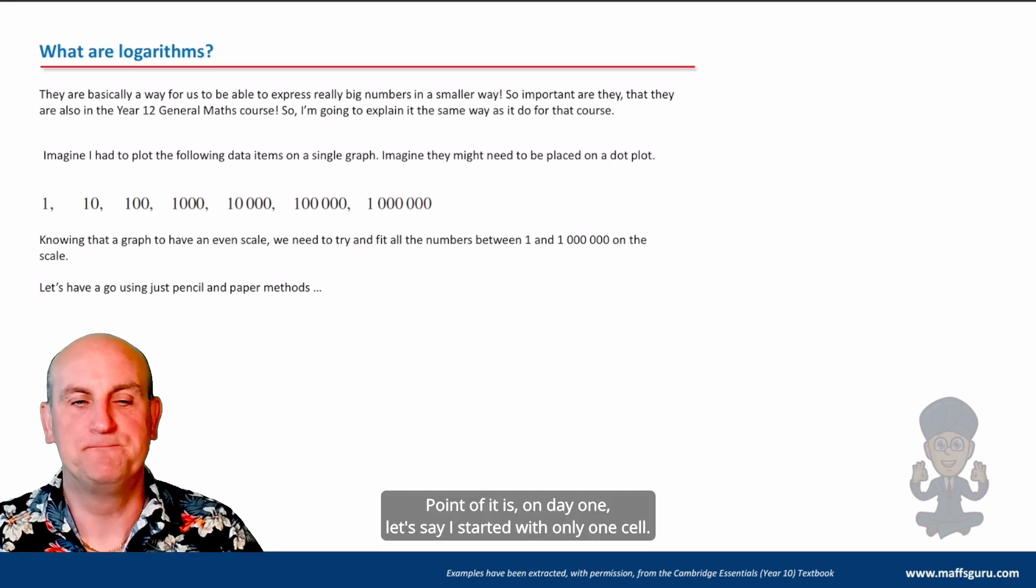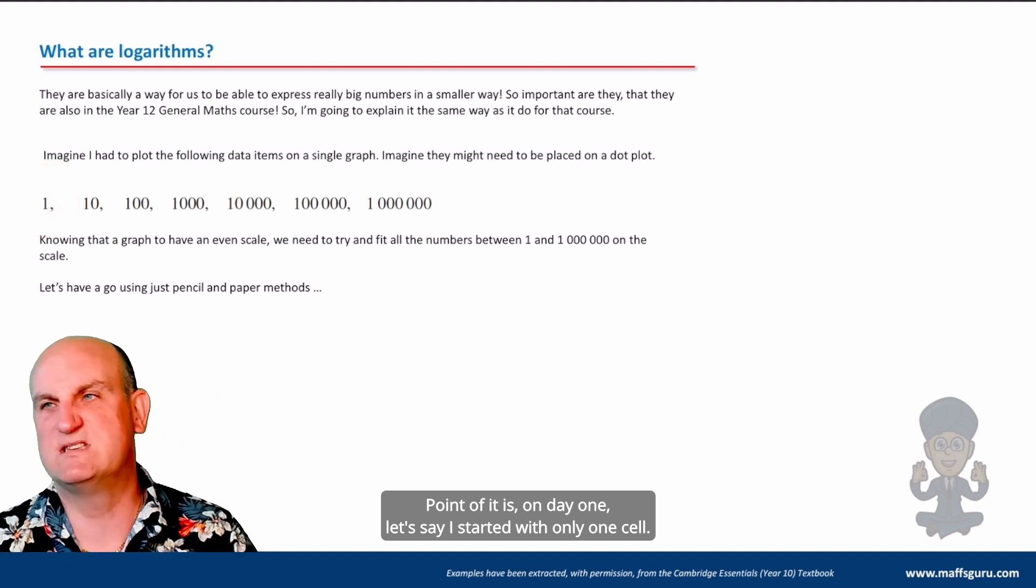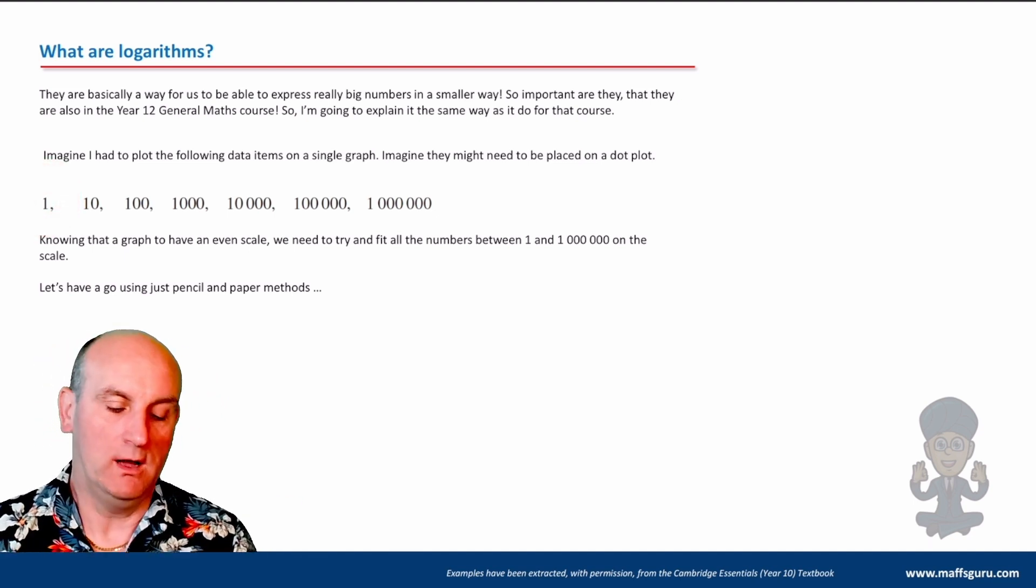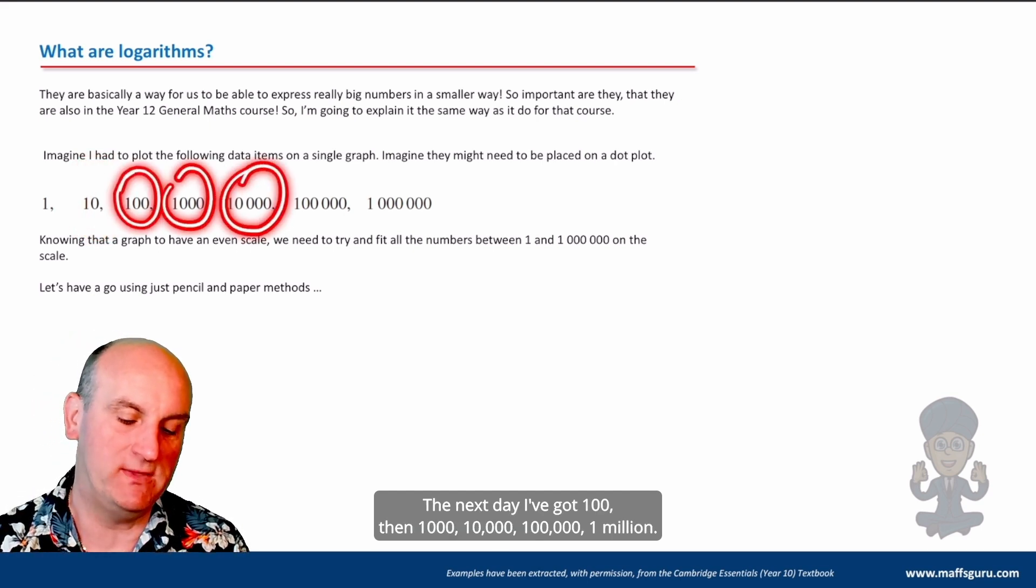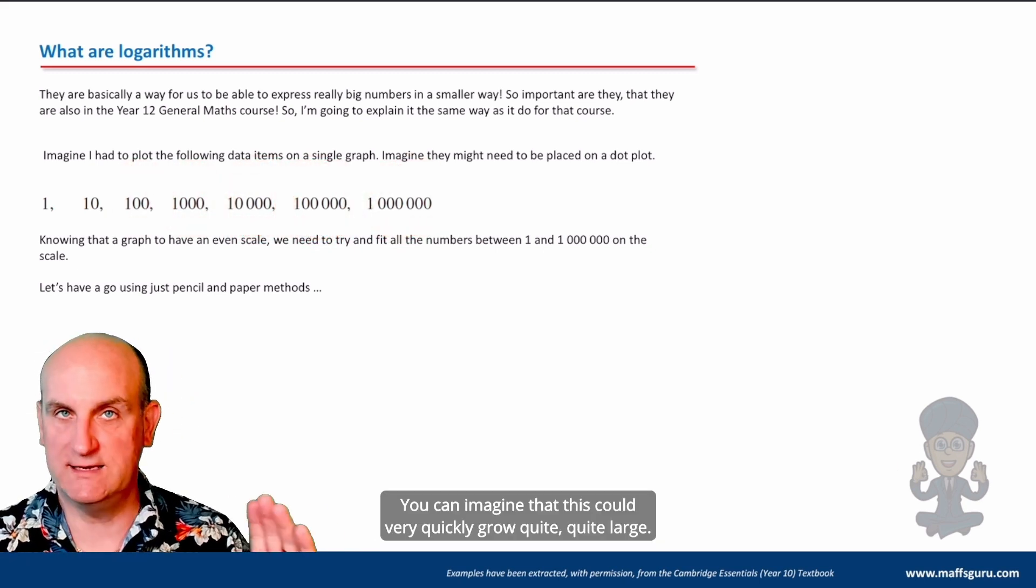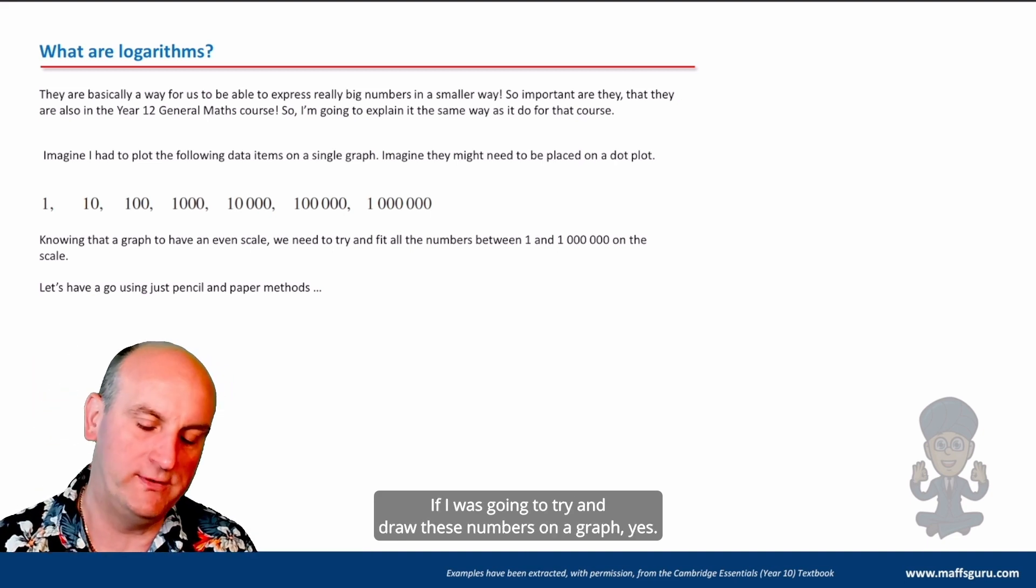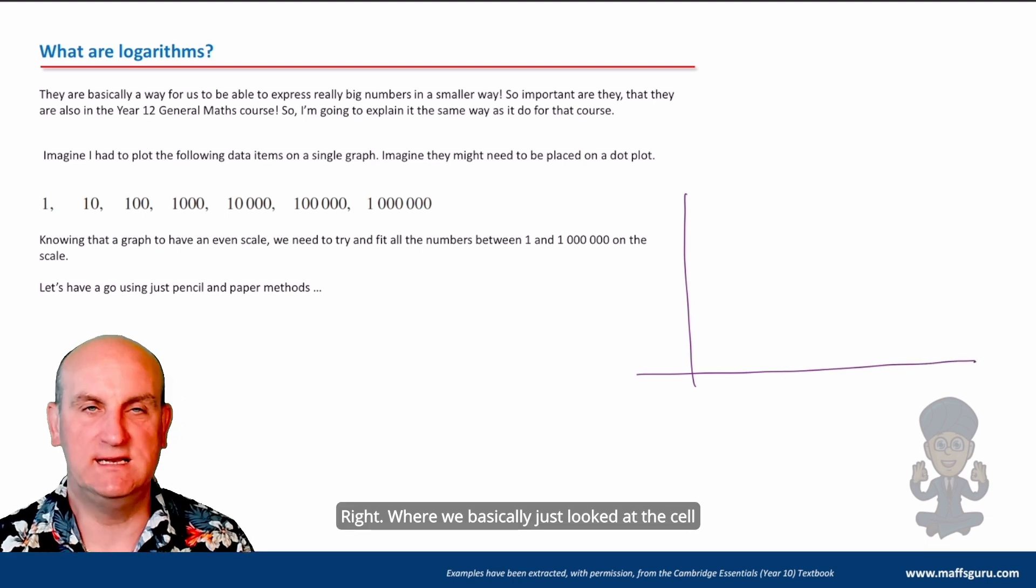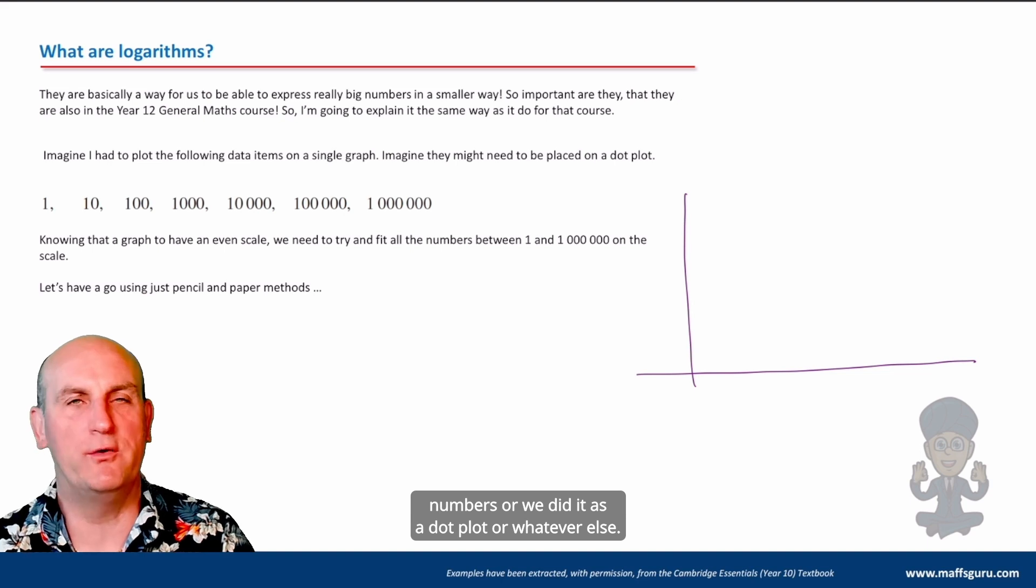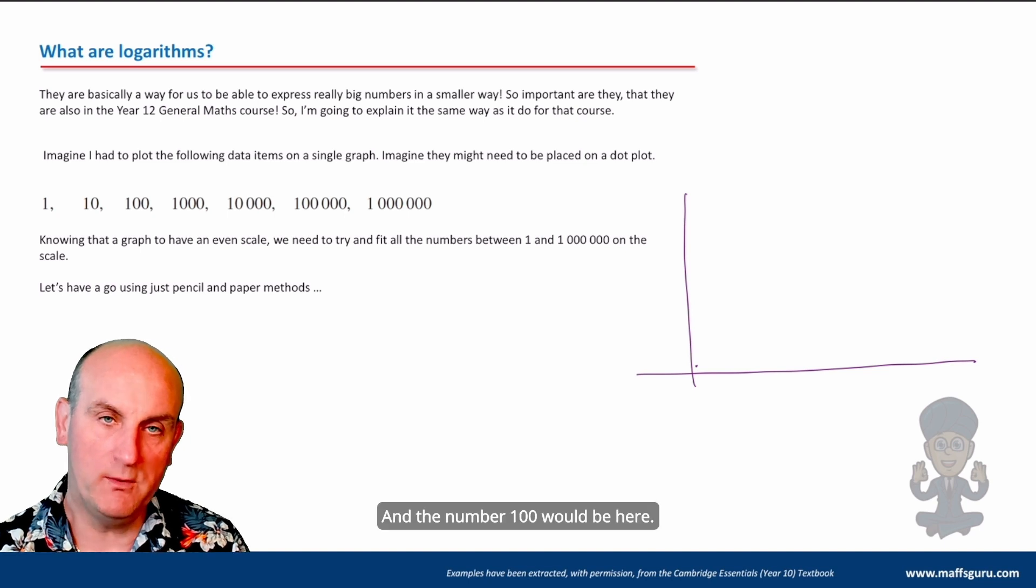Imagine I've got these numbers here. I've got data items and I'm going to try and put them on a graph. For some reason I was looking at cells and the growth. I had something in a petri dish. On day one, let's say I started with only one cell. I wake up the next day, I do some counting, I've got 10 cells. The next day I've got 100, then 1,000, 10,000, 100,000, 1 million.